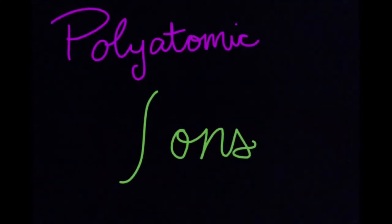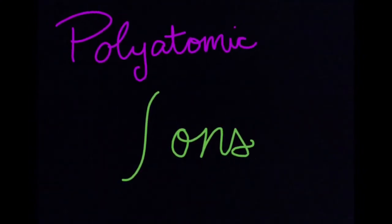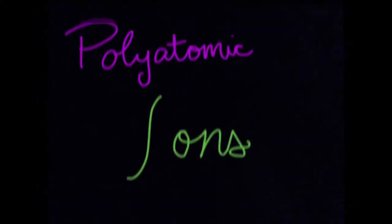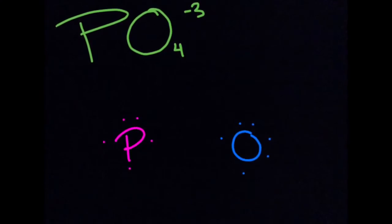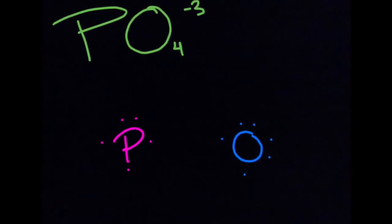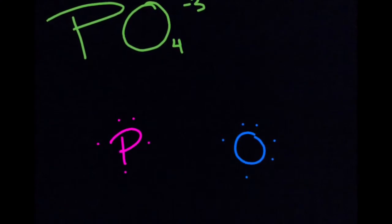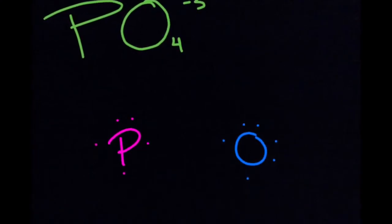Now I'm going to teach you about polyatomic ions. With polyatomic ions, electrons are either gained or lost. The polyatomic ion I will be teaching you about is phosphate. There is one phosphorus, which has five valence electrons, and there are also four oxygens, which each have six valence electrons.